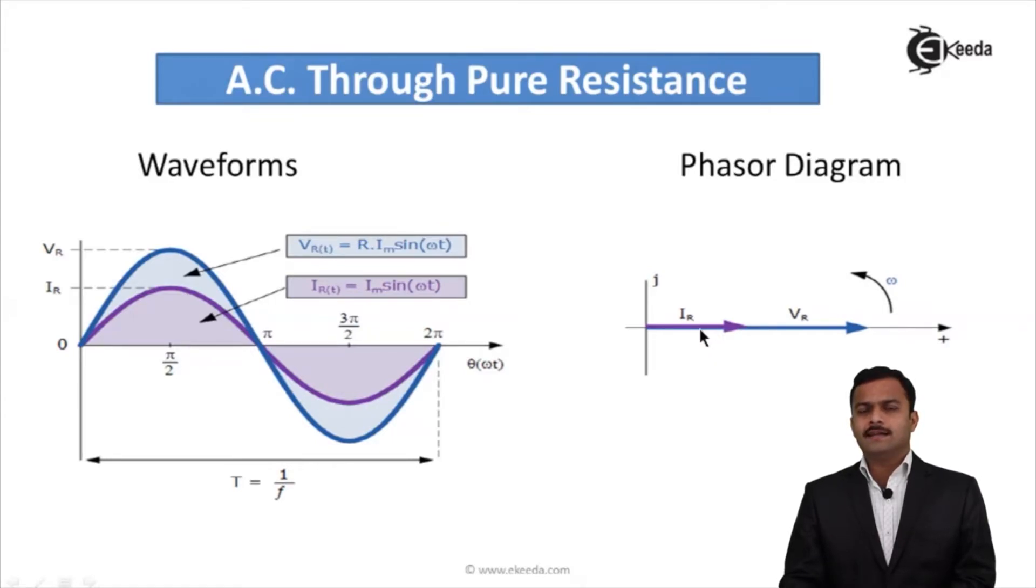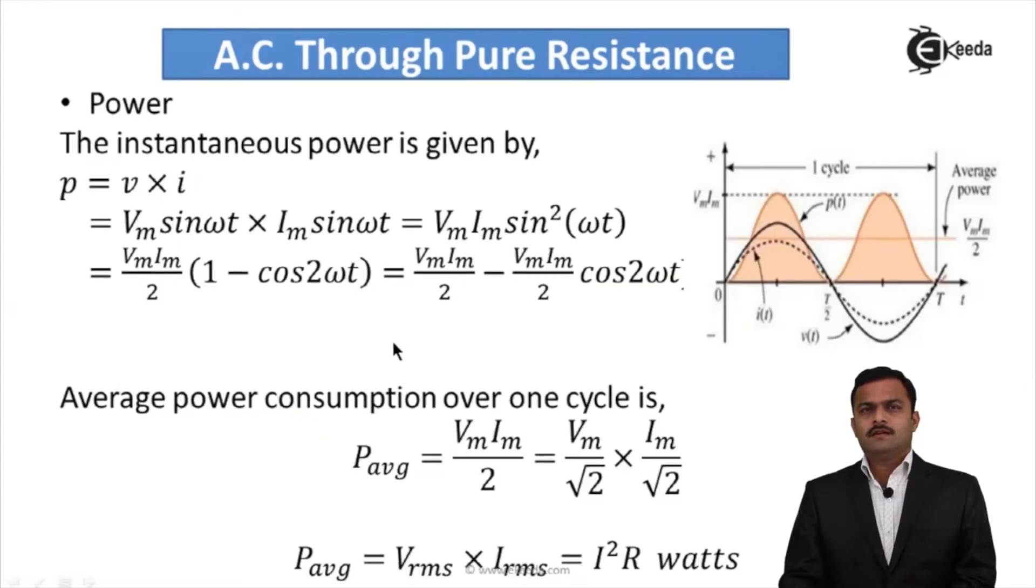Now let's see the power relation. The instantaneous power is given by P = v × i. V = Vm sin(ωt), and I = Im sin(ωt). If I solve, I will get P = Vm Im sin²(ωt). This is the instantaneous power.